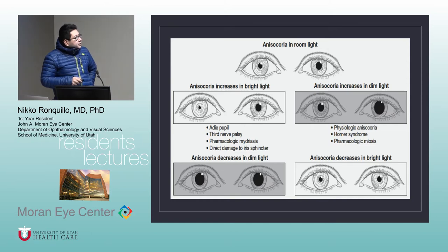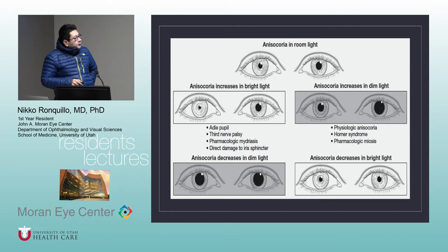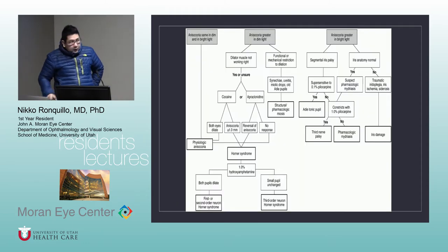In bright light, the pathologic pupil is usually the dilated one. The differential includes Adie's, third nerve palsy, pharmacologic mydriasis, and direct damage to the iris sphincter. In these situations, the anisocoria decreases in dim light, so the pupils look more equal. Anisocoria that increases in dim light includes Horner's syndrome and pharmacologic meiosis.